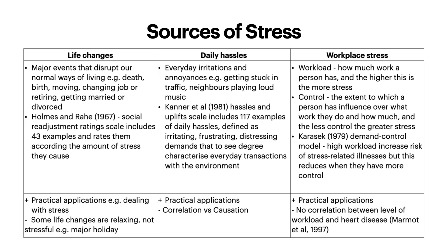Then we have daily hassles, which are everyday irritations and annoyances, such as getting stuck in traffic or neighbours playing loud music. Kanner et al. in 1981 came up with the Hassles and Uplift Scale, including 117 examples of daily hassles defined as irritating, frustrating, distressing demands that characterise everyday transactions with the environment. Again, there are obvious practical applications to help you understand and deal with these hassles, but again — correlation versus causation.